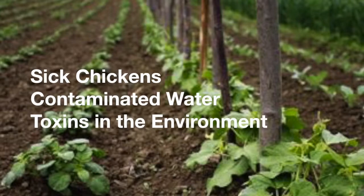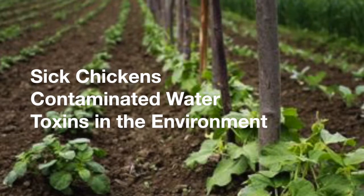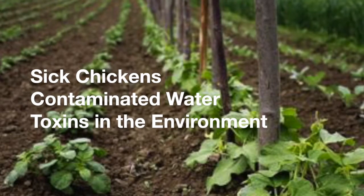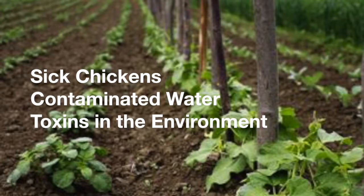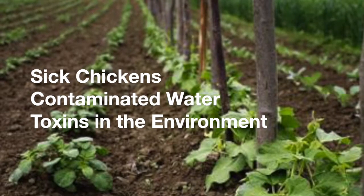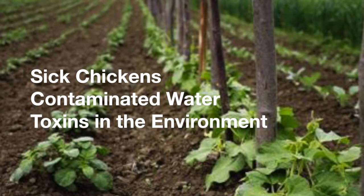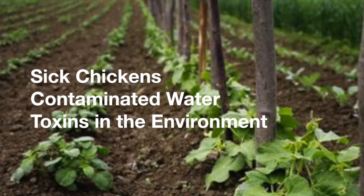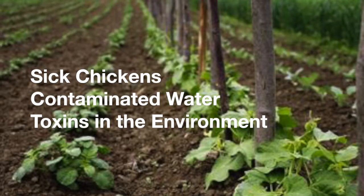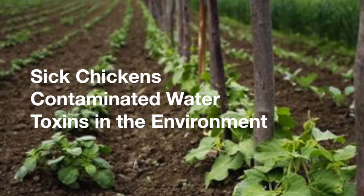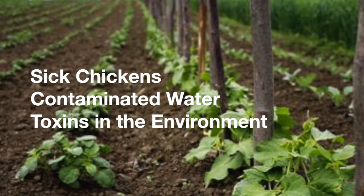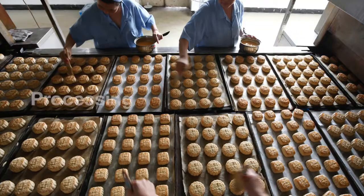Examples of contamination in production include: a hen's reproductive organs get infected, and the yolk of an egg can become contaminated in the hen even before it's laid. If fields are sprayed with contaminated water for irrigation, fruits and vegetables can become contaminated before harvest. Fish in some tropical reefs may acquire a toxin from smaller sea creatures they eat.